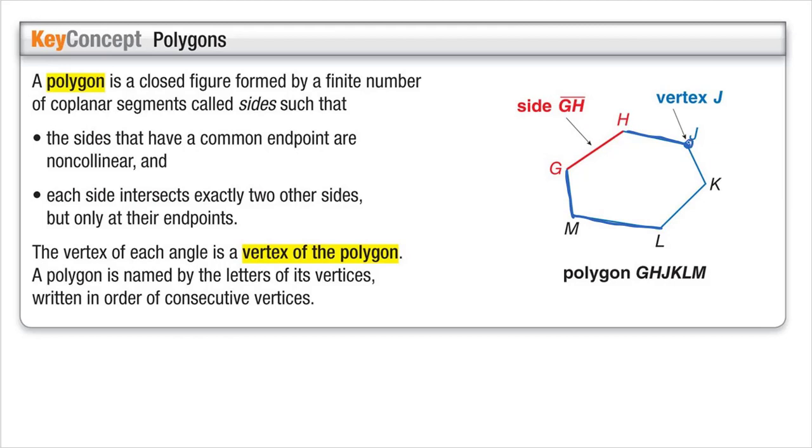We have vertices of our polygon, which are each one of these points. And the polygon is named by its vertices, written in an order of consecutive vertices. So typically, we do alphabetical order. So we start with G, and we move around. G, H, J, K, L, M. So you move around from one vertex to the next in naming your polygon.